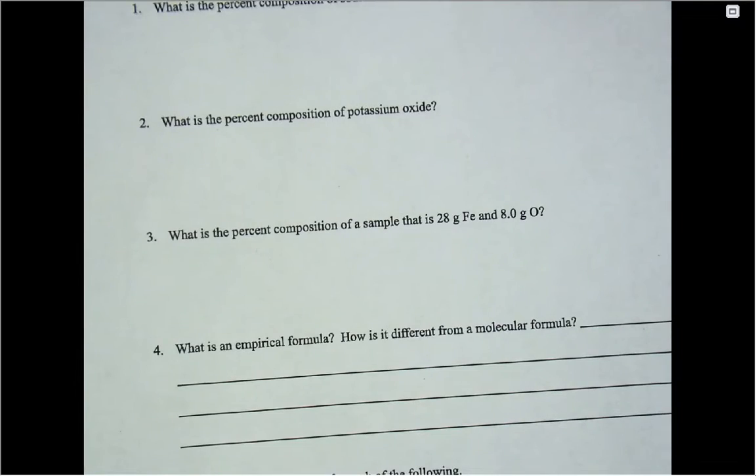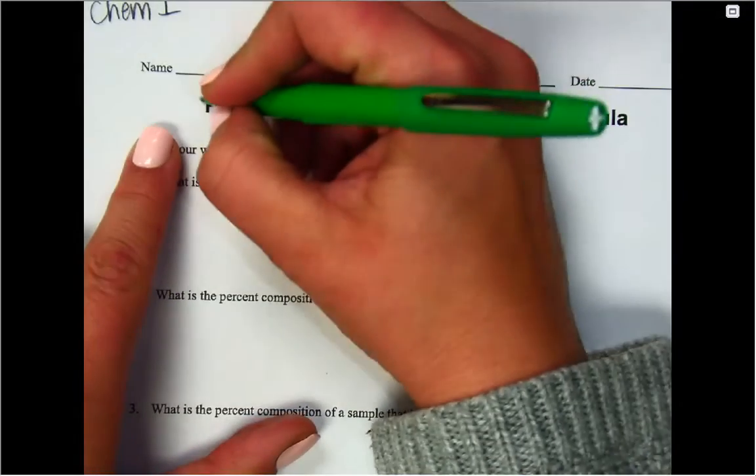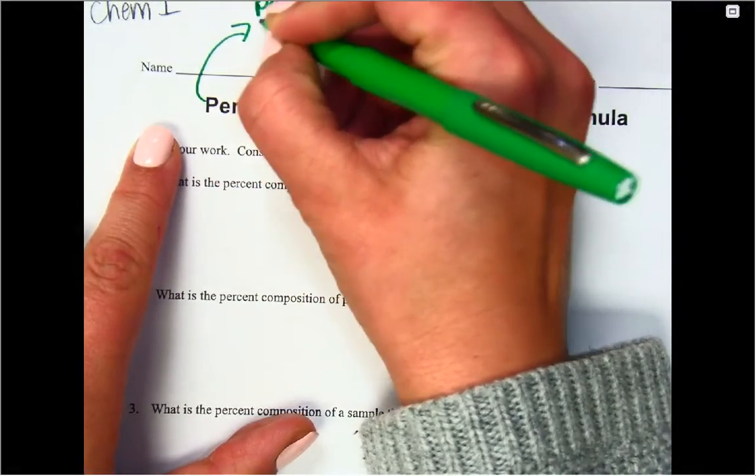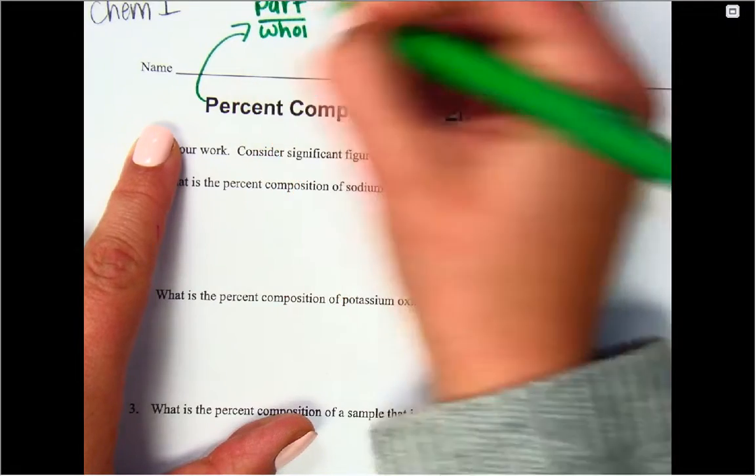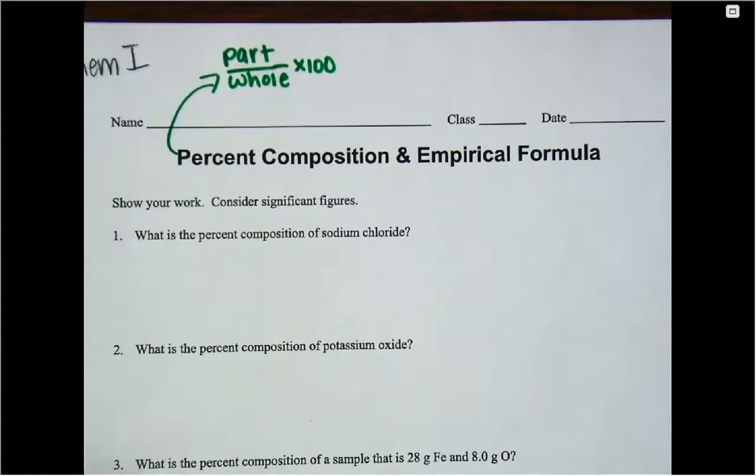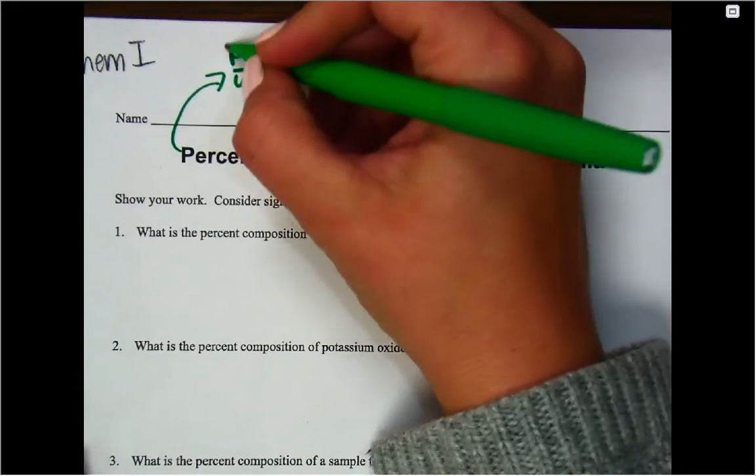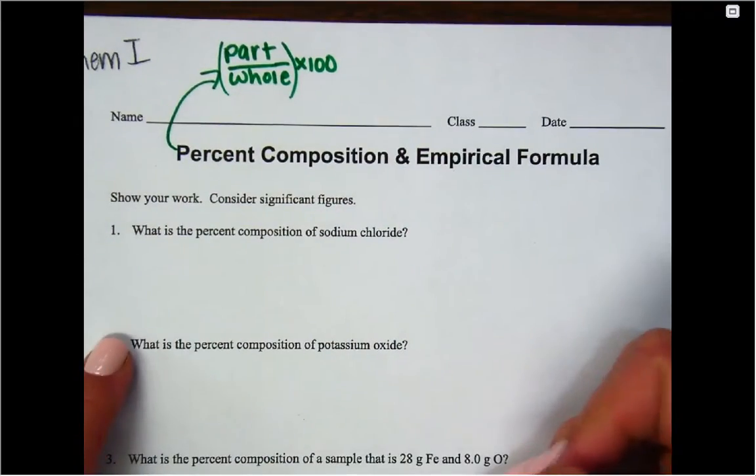If you don't know where your packet is, don't worry about it right this second, but I would find it before tomorrow. So for percent composition, the simple way that you're going to be thinking of percent composition is just going to be part over whole, and then you're going to multiply that by 100. I would say the most difficult part of this is going to be knowing how many of each element you have. So make sure that you're practicing that a little bit today.